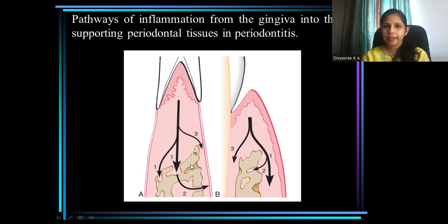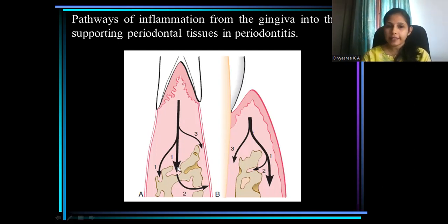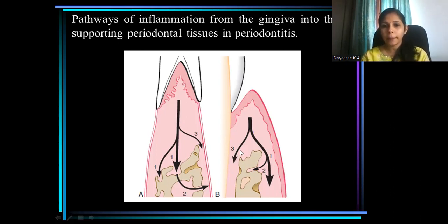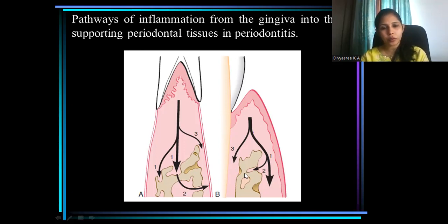In the interdental areas, the gingival inflammation extends into the crest of alveolar bone, and from the crest of alveolar bone, through the crestal vessels, it enters the marrow spaces. Or in some cases, the inflammation even extends into the periodontal ligament area — into the connective tissue of the periodontal ligament — and from there extends into the alveolar bone marrow spaces.